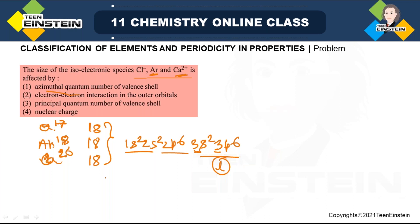Whether the last electron is in a p, d, or s orbital is not important. We just need to check whether they have the same number of electrons. Electron-electron interaction: since all have the same number of electrons, the electron-electron interaction in the outer orbitals (3s, 3p) is also the same — not correct. Principal quantum number of the valence shell is also the same for all. So the only important point is nuclear charge — that is the correct option.